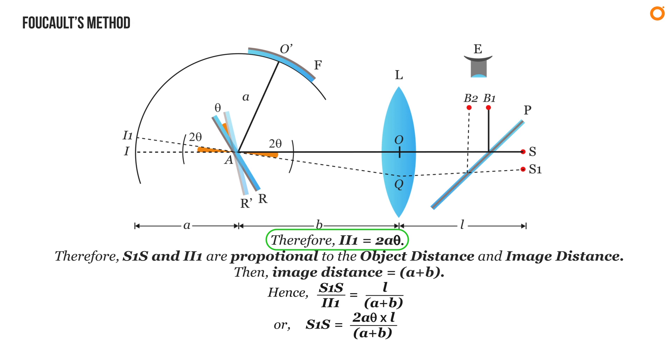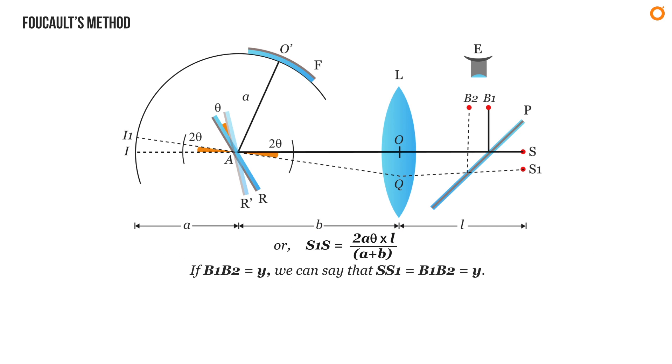Since II1 equals 2A theta, S1S equals 2A theta times L divided by A plus B. Also if B1B2 equals Y, we can say that SS1 equals B1B2 which is equal to Y. This is because the sizes of object and image in plane mirror are equal. Hence we can write Y equals 2A theta L divided by A plus B, or theta equals Y times (A plus B) divided by 2AL. Let it be equation one.